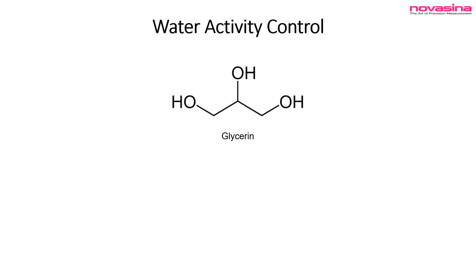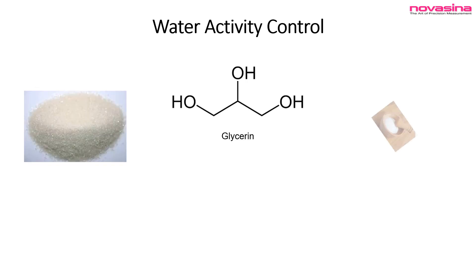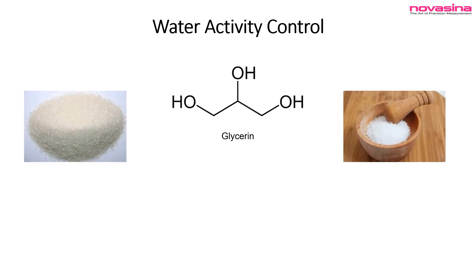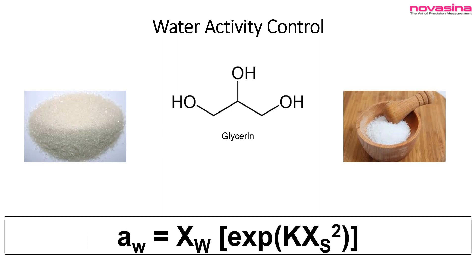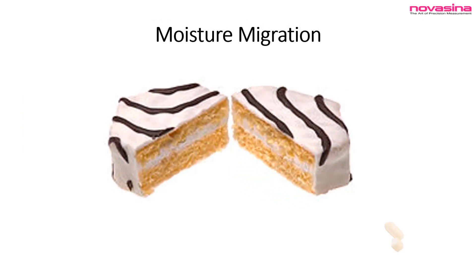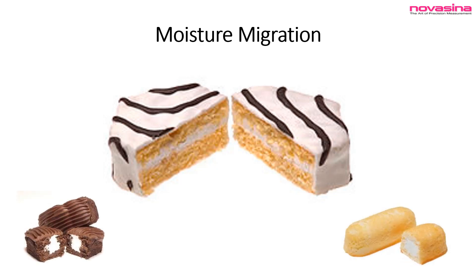Knowing this, you can make changes to your formulation to adjust water activity. For example, you might choose to add glycerin to your product, which will lower water activity without additional drying and without altering the flavor. An additive that lowers water activity is called a humectant, and you can closely predict how much humectant you need to add to achieve a certain water activity using mathematical models set up in a spreadsheet.